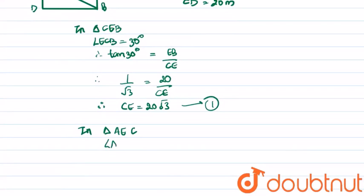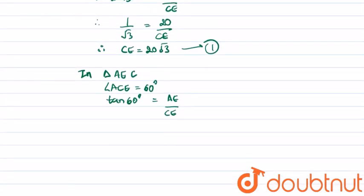Therefore in triangle AEC, we have angle ACE equal to 60 degrees. Therefore tan 60 degrees equals the opposite upon adjacent, so tan 60 degrees equals root 3, which equals AE upon CE. Therefore AE equals CE × root 3.